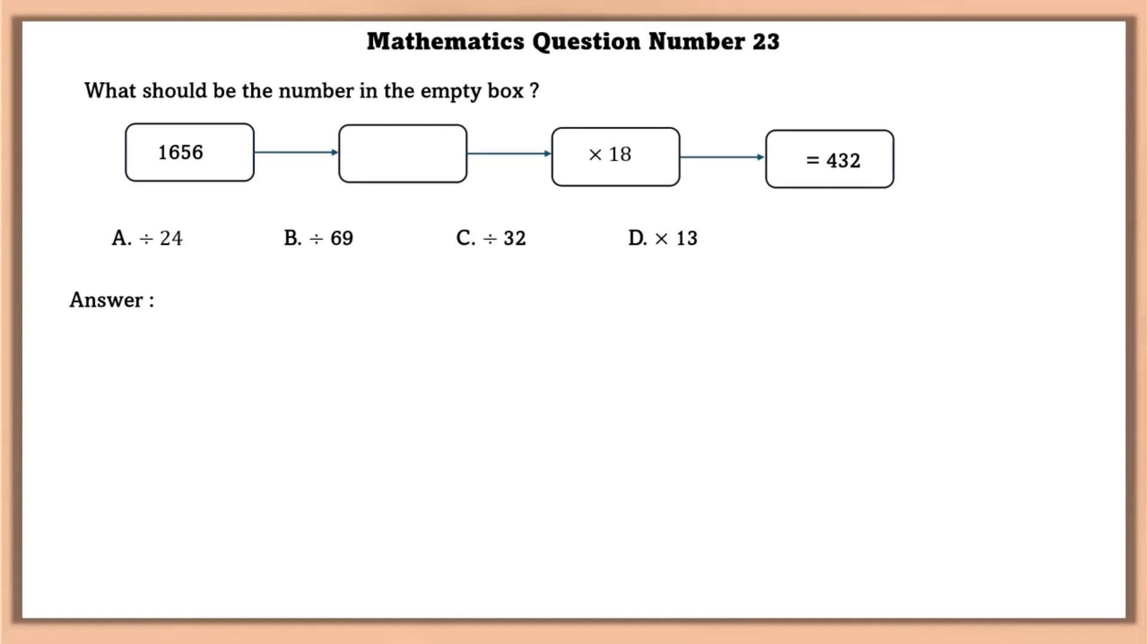Mathematics question number 23. What should be the number in the empty box? Let the unknown term be N. Given 1656 divided by N multiplied by 18 is equal to 432. Using the given information, we have derived our equation.